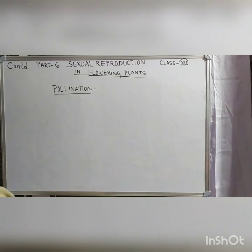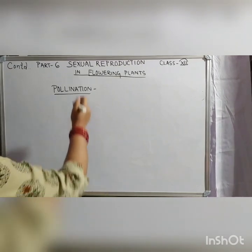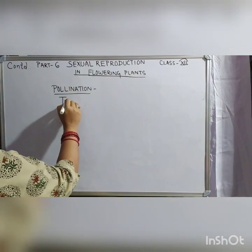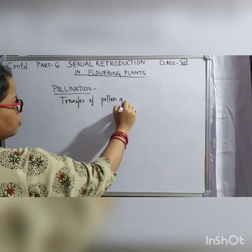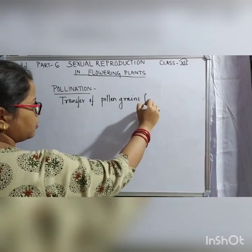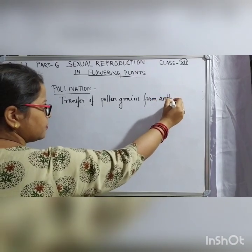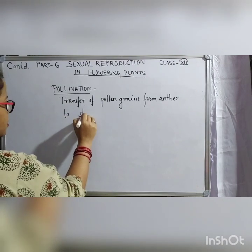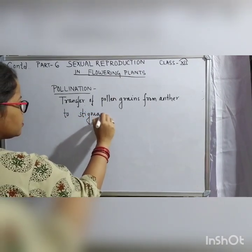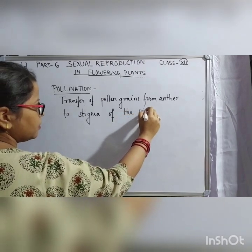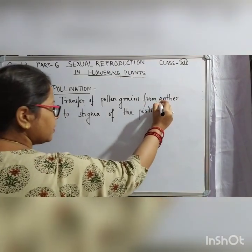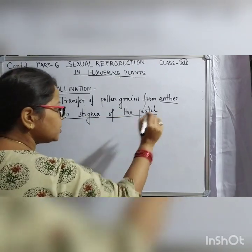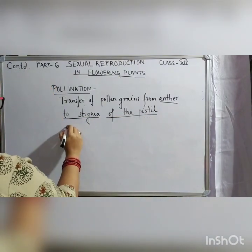Today's topic is pollination. Pollination is the process of transfer of pollen grains from the anther to the stigma of the pistil, whether it is from the same flower or a different flower. Transfer of pollen grains from anther to the stigma of the pistil is called pollination.